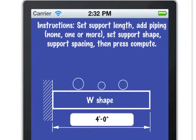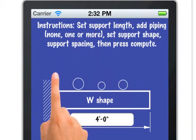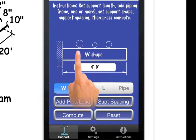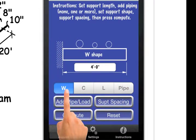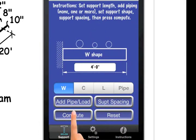Let's review the instructions so we know everything is entered correctly. Set support length. Done. Add piping, none one or more. Done. Set support shape. W. Set support spacing. Then press compute. So we're all ready to go.